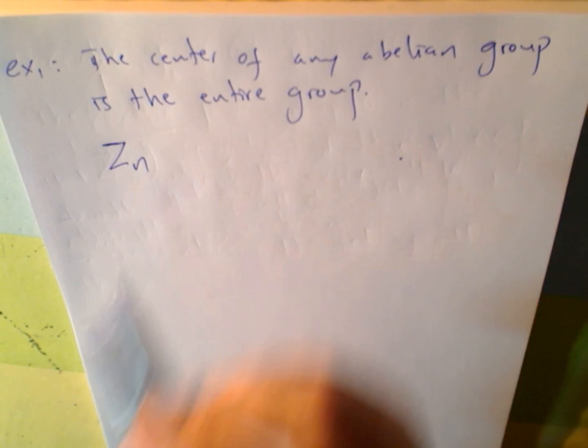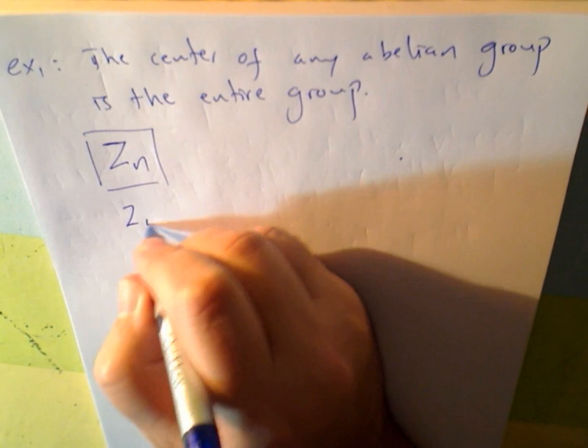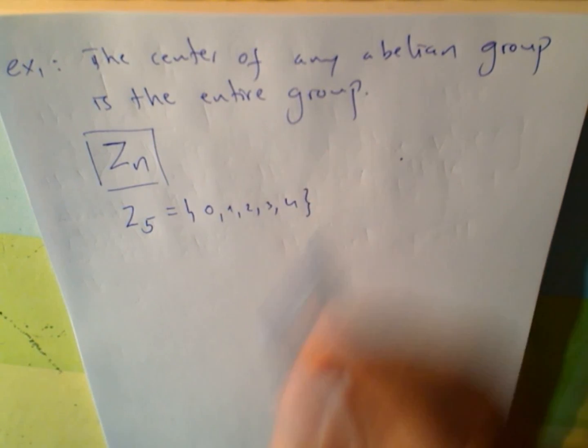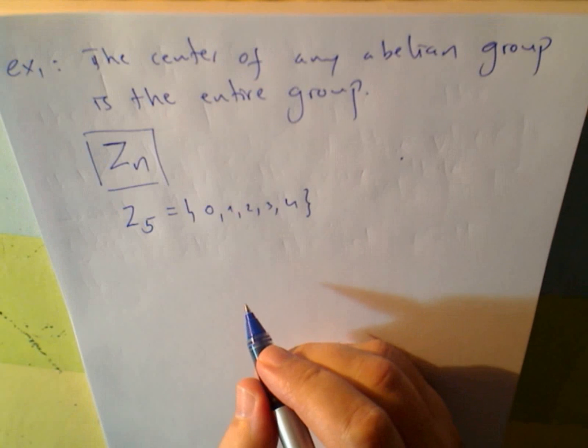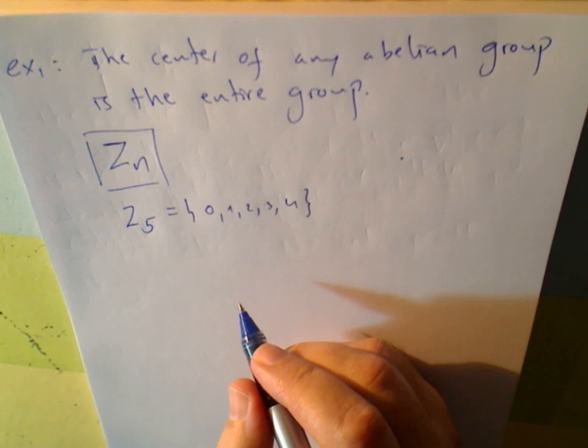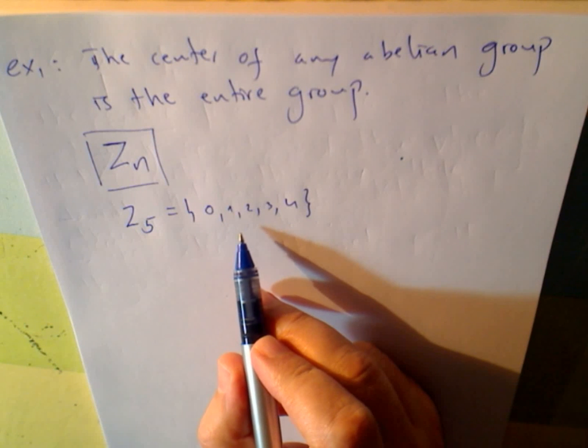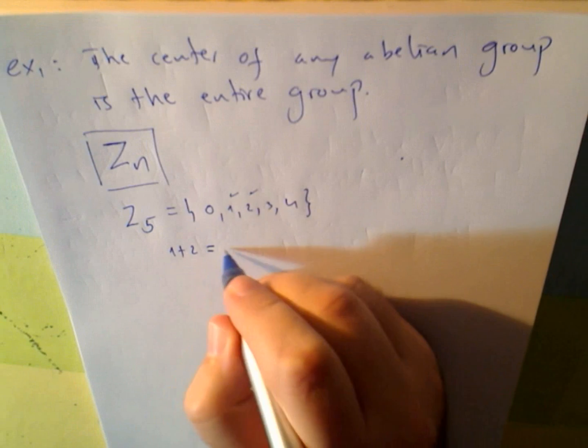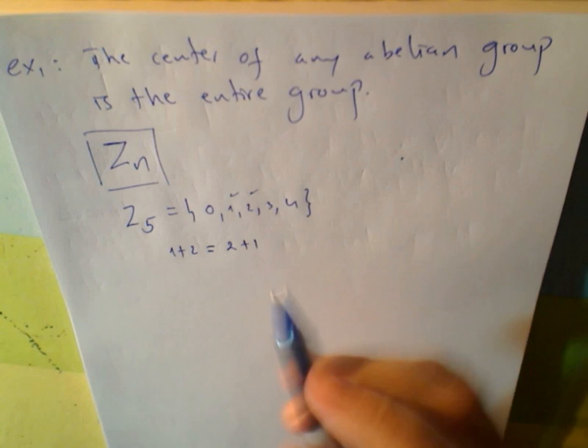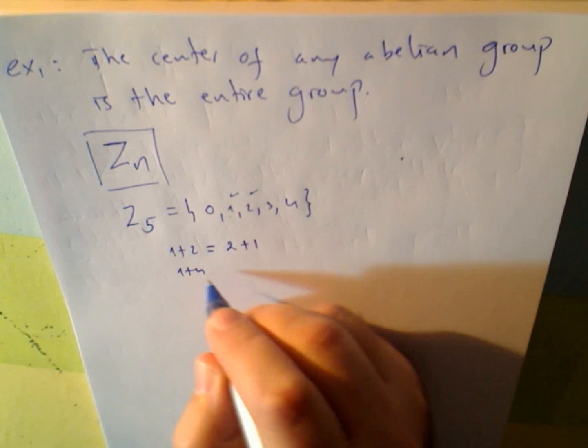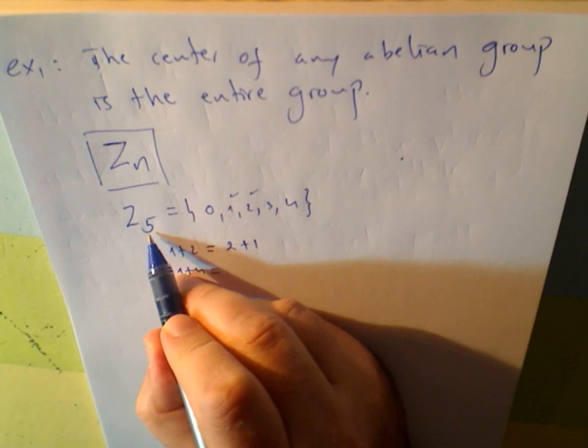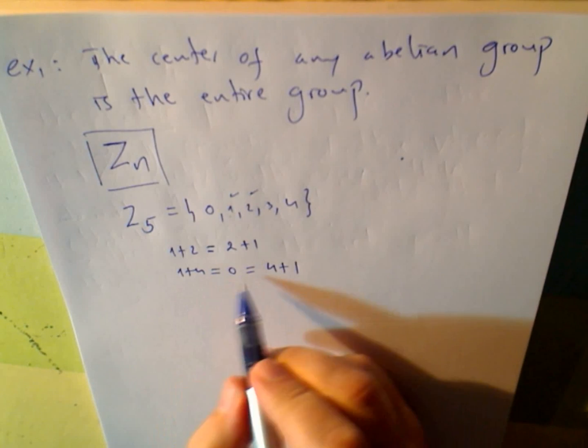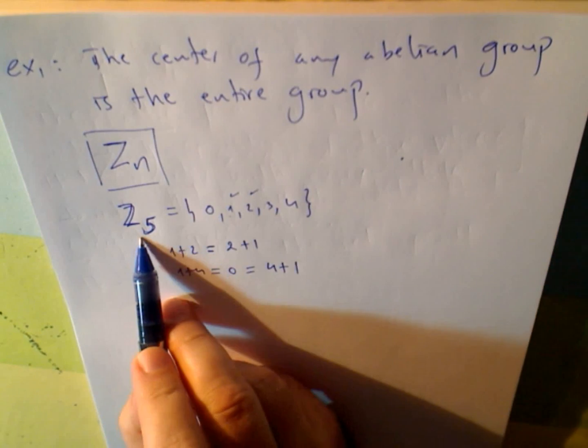Z4, Z5, all this, for instance, for Z5, under addition, of course, 0, 1, 2, 3, 4. This group is abelian. So, the center is the entire group, because just pick any element like this one and this one. 1 plus 2 will always equal 2 plus 1. 4 plus 1, 1 plus 4, this is modulus 5, right? Equals 0, and 4 plus 1 is 0, too. The center of Z5 is Z5.